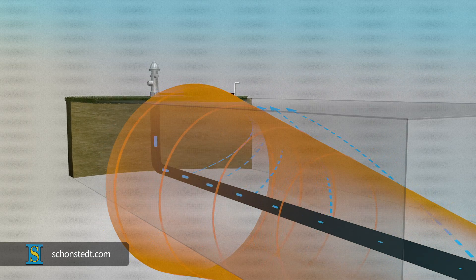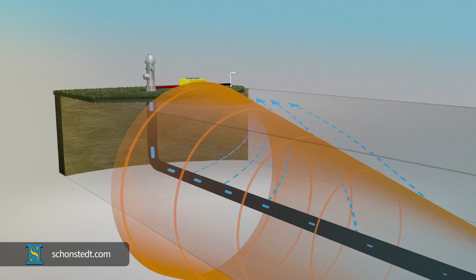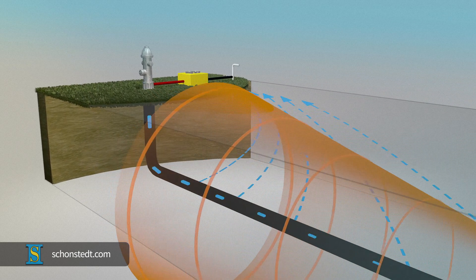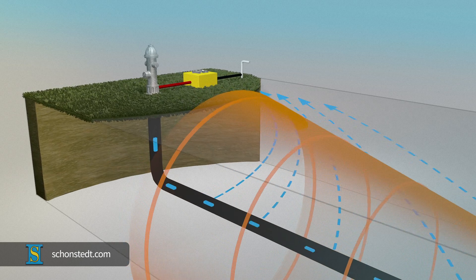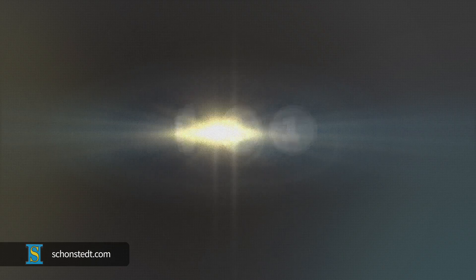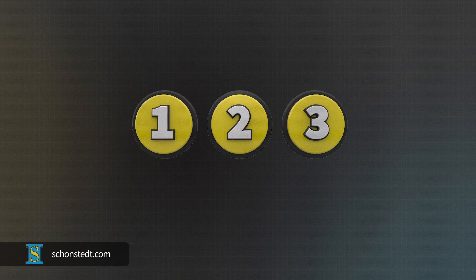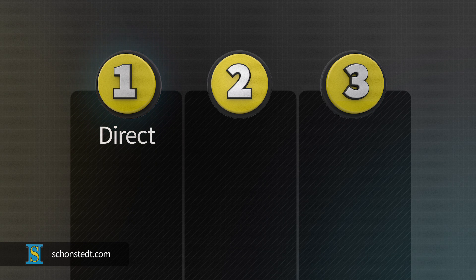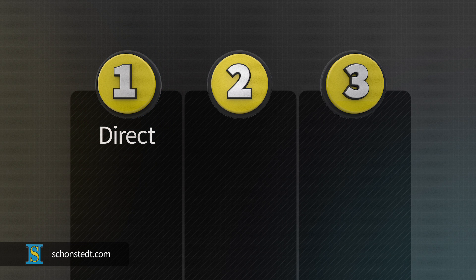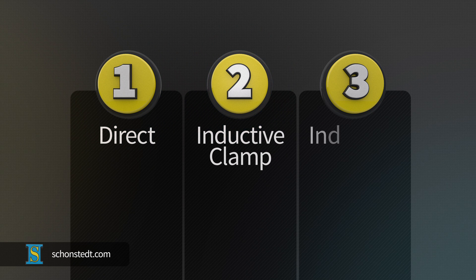Active locating requires you to create an electrical circuit through which current can flow. This can be accomplished with three different types of connections, known as active modes. The three active modes of connecting are direct, also known as conductive, inductive clamp, and inductive.